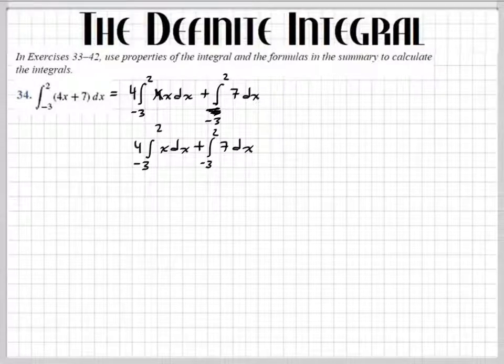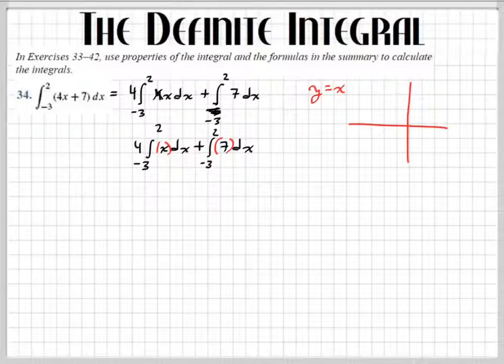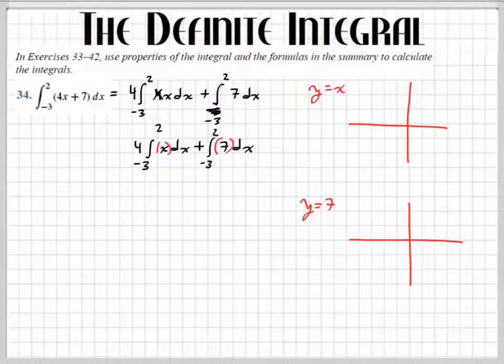So we have two graphs we've got to look at. We've got to look at this graph right there and this graph right there. So let's see. y equals x. Look at that graph. And the other one is y equals 7. Now, y equals 7. Let's do that one really fast because that one is so easy.